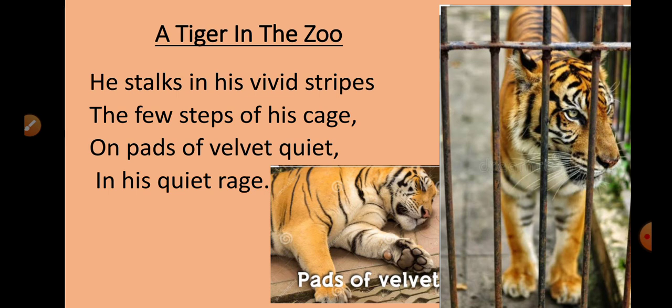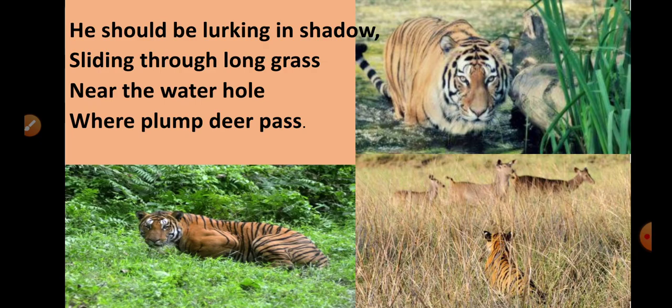Now let's move on to the second stanza. The poet says: 'He should be lurking in shadow, sliding through long grass near the water hole where plump deer pass.' In the second stanza, the poet describes a tiger in a jungle. He says that instead of being in a zoo, the tiger should have been behind long grass, lurking.